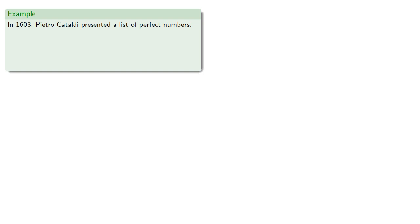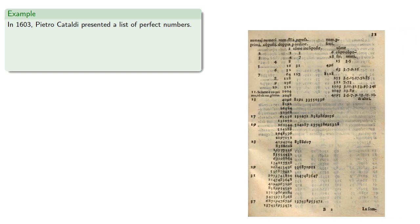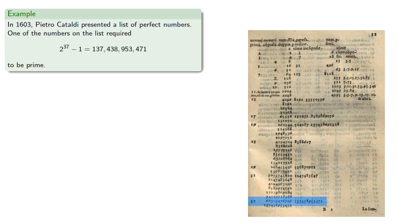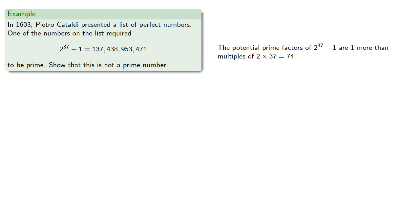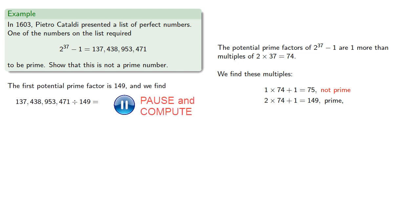For example, in 1603 Pietro Cataldi presented a list of perfect numbers, and one of the numbers on the list required 2^37 - 1 to be prime. It turns out that this number is not actually prime. The potential prime factors of 2^37 - 1 are one more than multiples of 74. 1 times 74 + 1 = 75, not prime. 2 times 74 + 1 = 149, which is prime, so the first potential prime factor is 149.